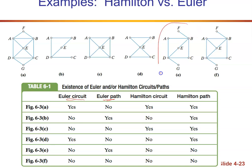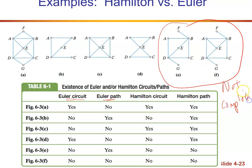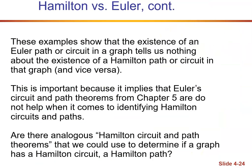I want to point out that graphs E and F are not complete, so you should not be able to find a circuit — and in this case you can't find a path either. This shows us that the existence of an Euler path or circuit in a graph tells us nothing about the existence of a Hamilton path or circuit, or vice versa. Really no relationship between the two.